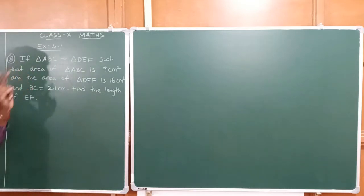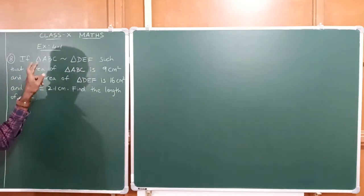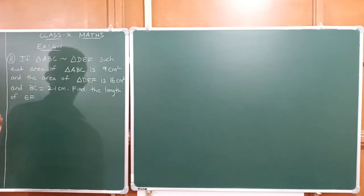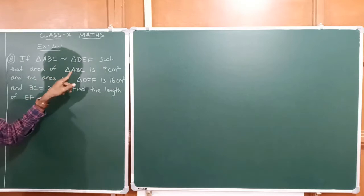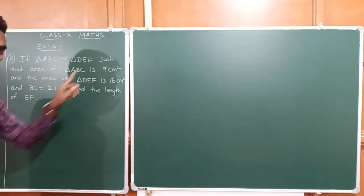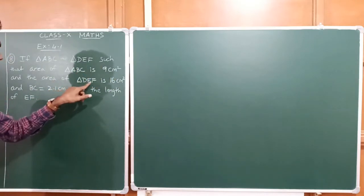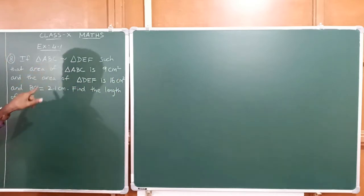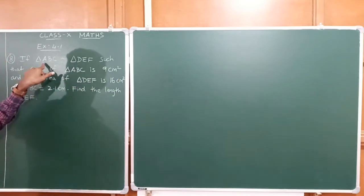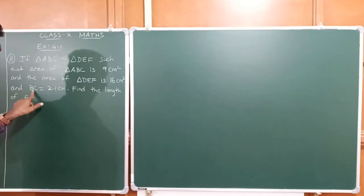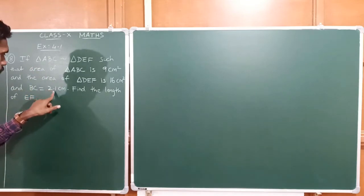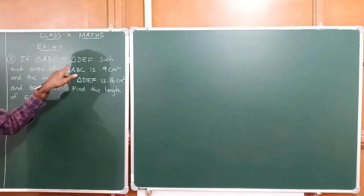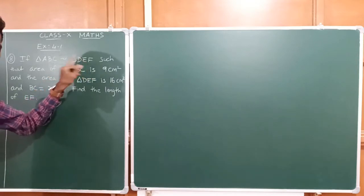So in the question we have two triangles — triangle ABC and triangle DEF — two triangles similar to each other. Triangle ABC area is 9 centimetre square, triangle DEF area is 16 centimetre square. In triangle ABC, one of the sides BC has length 2.1 centimetre. EF is one of the sides of triangle DEF.